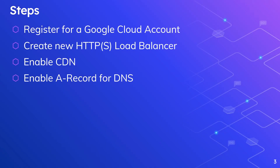Now the overall steps: first, register for a Google Cloud account if you don't already have one. Then create a new HTTP or HTTPS load balancer based on your requirement. For the load balancer, enable and associate the CDN. Once CDN is configured, we need to update the DNS — right now test.albinsblog.com is pointing to my Apache server's IP address, and that should be changed to point to the CDN front-end IP.